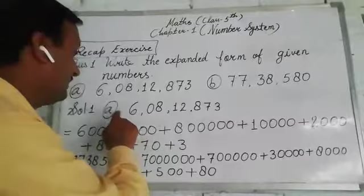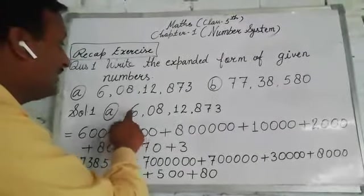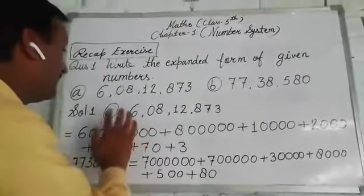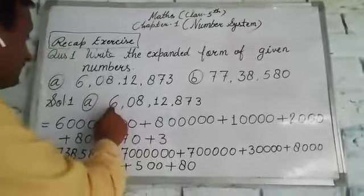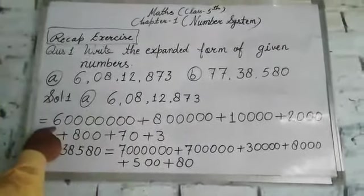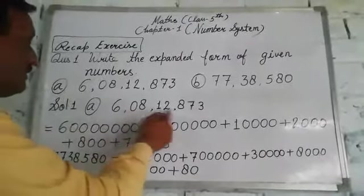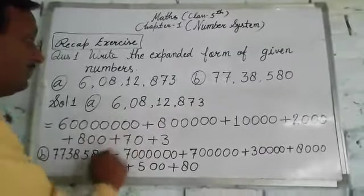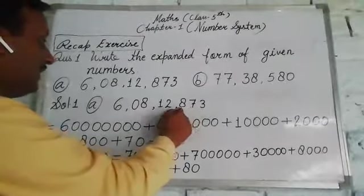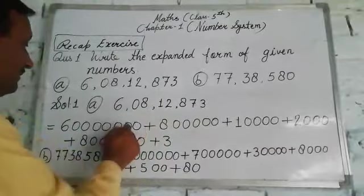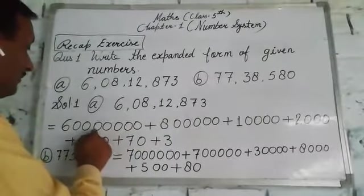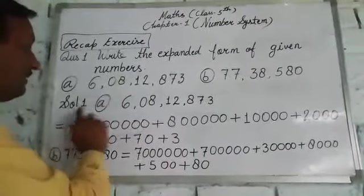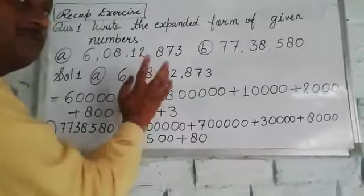The first digit is 6. So after 6, you can see how to write the expanded form? First, we will write 6 and it will be based on the second number. Then we will write 7 here to its number. After the last number, the number of digits.